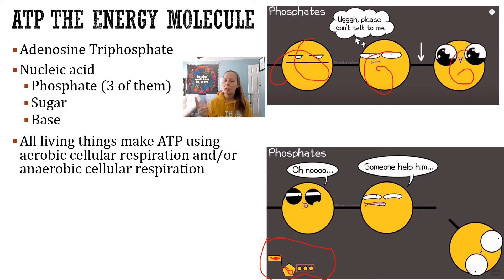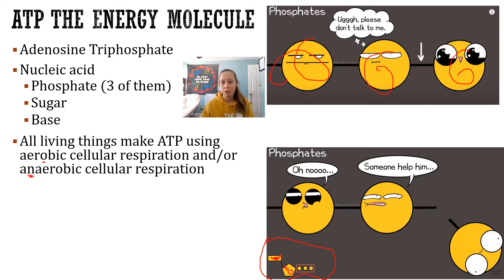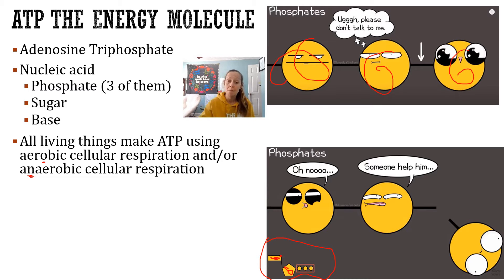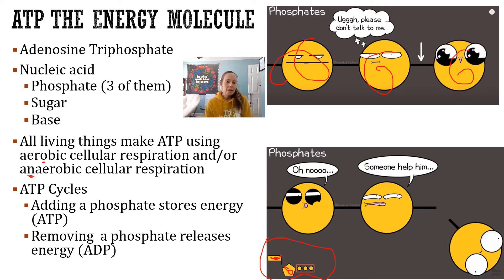All living things are going to make ATP using cellular respiration. They can do it aerobically — think of aerobics, it has oxygen — or anaerobically, which has no oxygen. So they can do cellular respiration with oxygen present or without. We're going to focus on aerobics because that's the type most organisms use to get the most ATP.